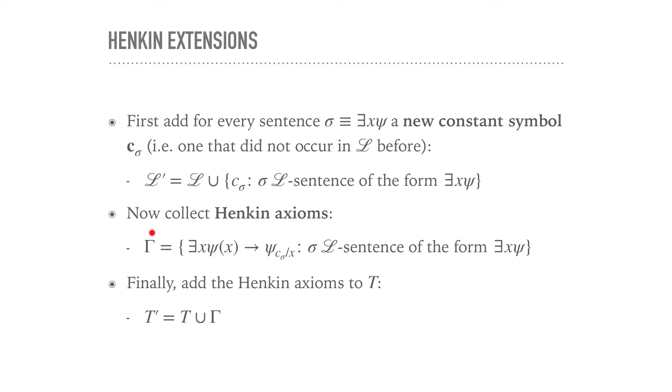And now that we have the symbols, we can actually form the Henkin axioms to make our theory a Henkin theory. So we collect those in a set Γ. So Γ will consist of all formulas of this form: ∃x ψ(x) implies ψ(c_σ), that constant plugged in for x. And then finally, we add our axioms to the theory to get a new theory T'. This will be, of course, the theory now over a new language, the extended language L'.